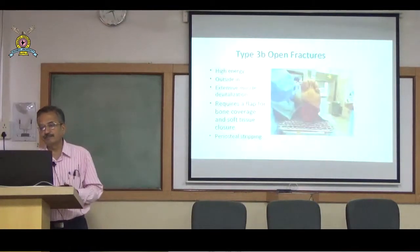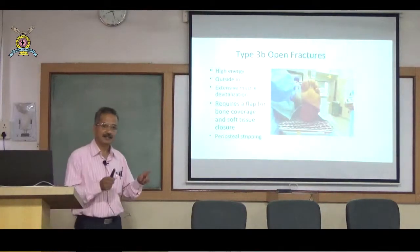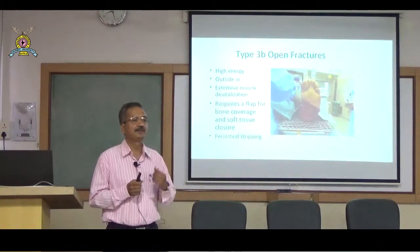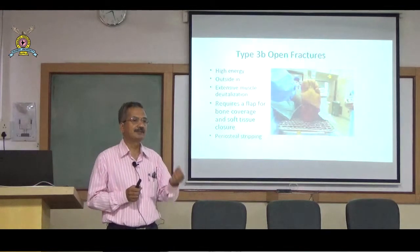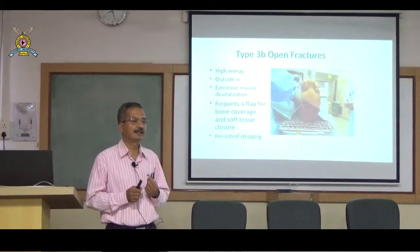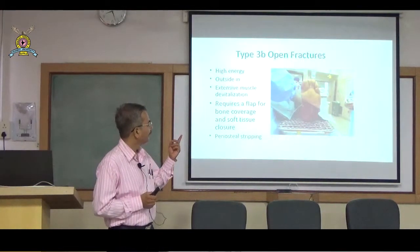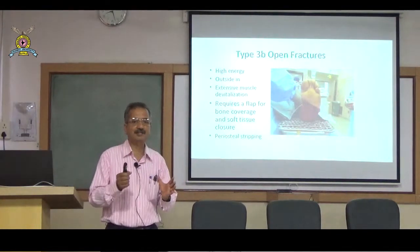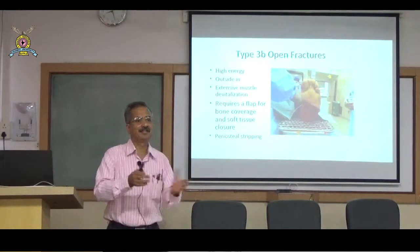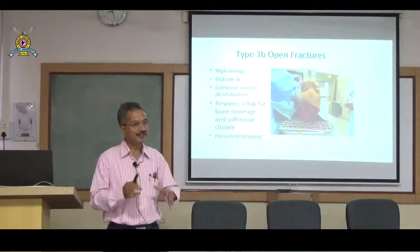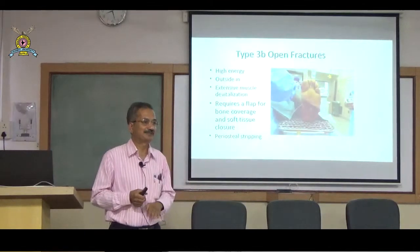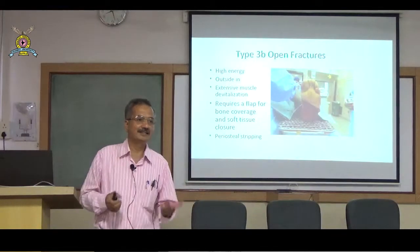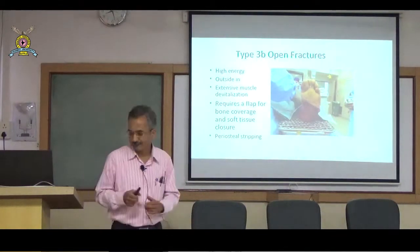Type IIIB: high-velocity comminuted fracture with extensive stripping of muscle and periosteum. The skin or muscle is so severely damaged that the exposed bone cannot be covered; plastic surgery or flap cover is required.